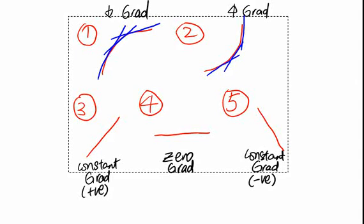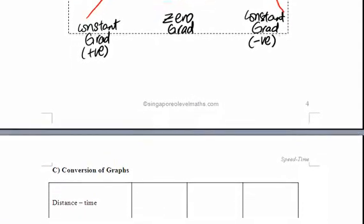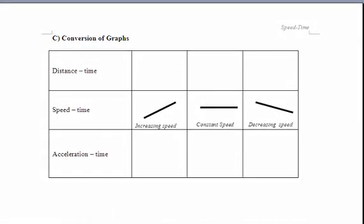Let us now go to a table of summary. What you see on the screen now is a summary table. And what is given to you is the speed time graph. Now, first question you should be asking yourself is that how do we get the distance? How do we get the information of speed from distance time graph? It is, in fact, through the gradient.